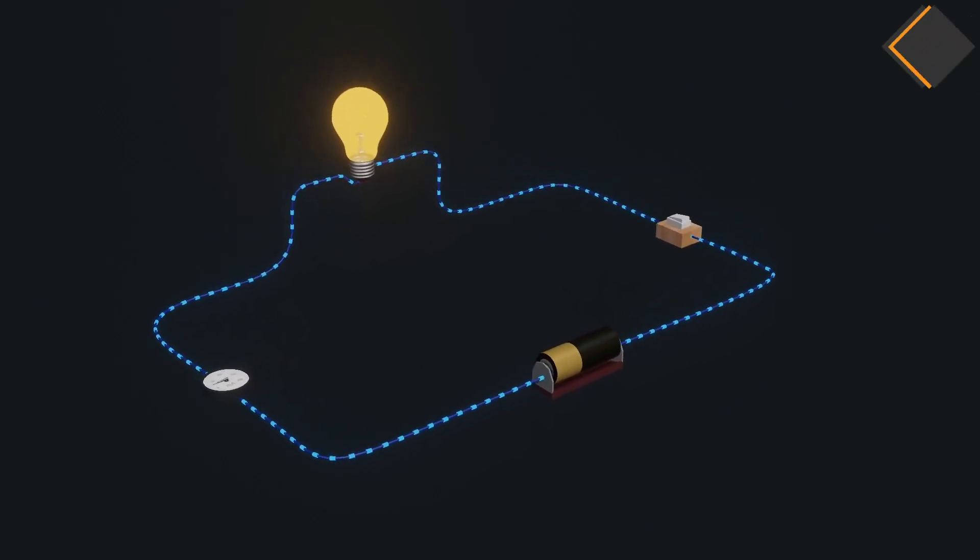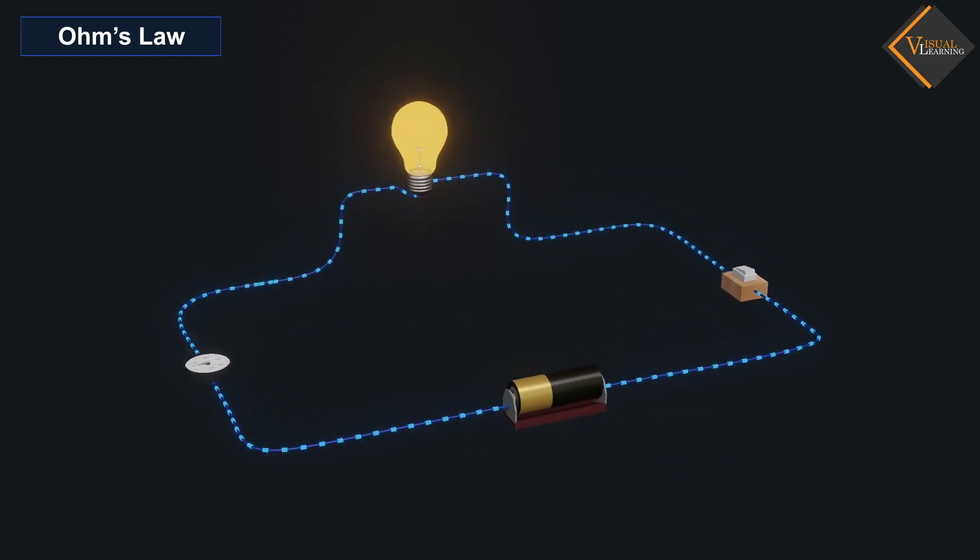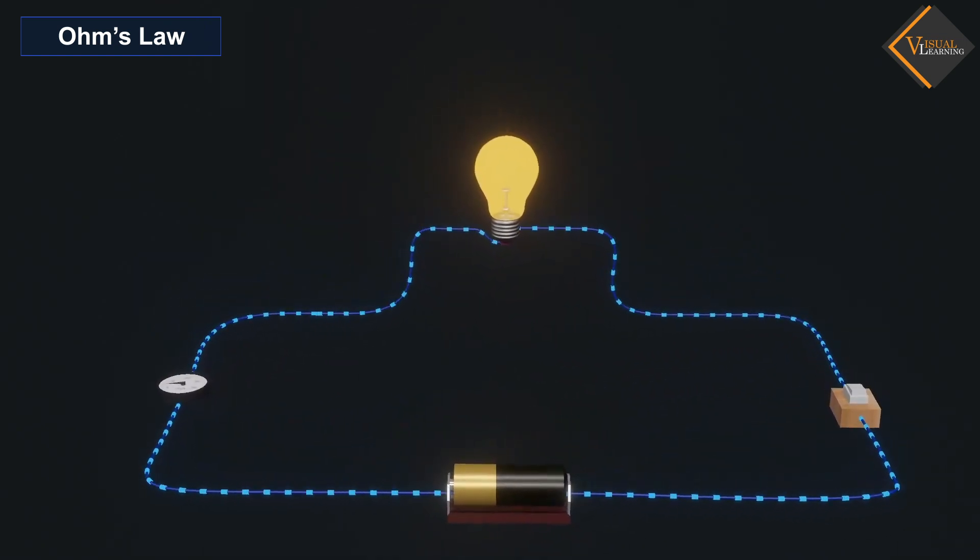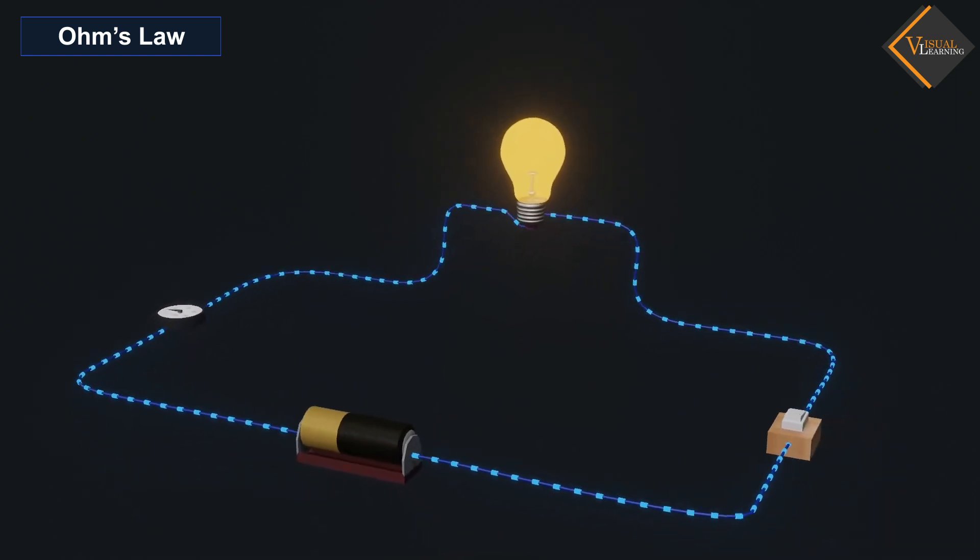In this video, we will understand Ohm's Law. We know that when electric potential means voltage is given to a circuit, current starts to flow in the circuit.